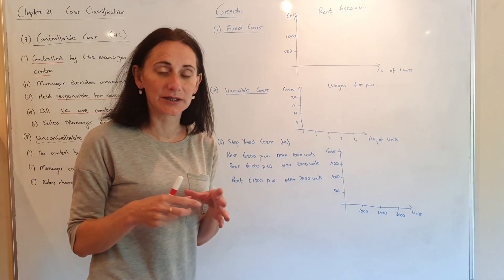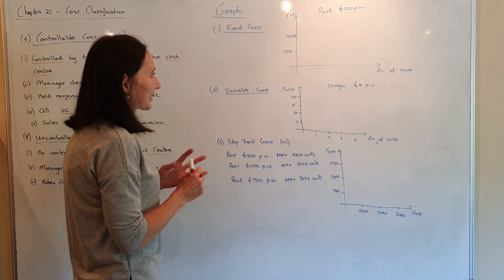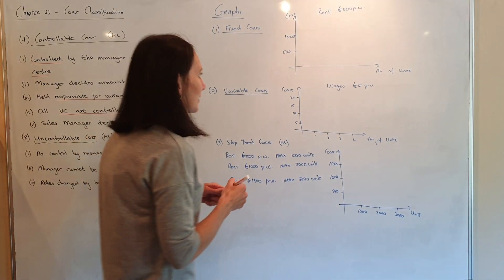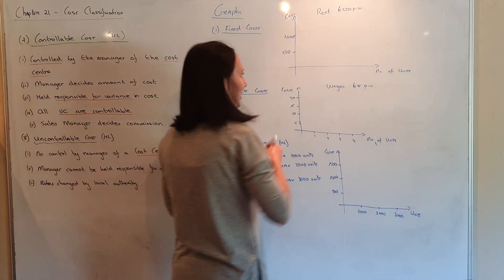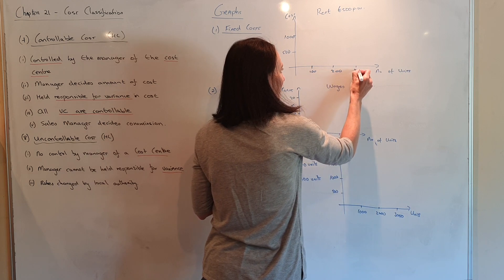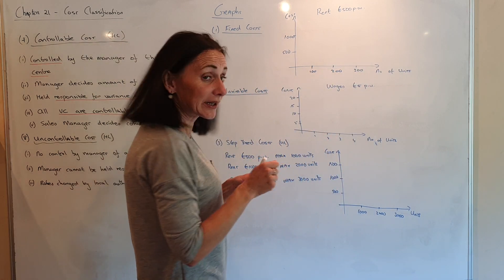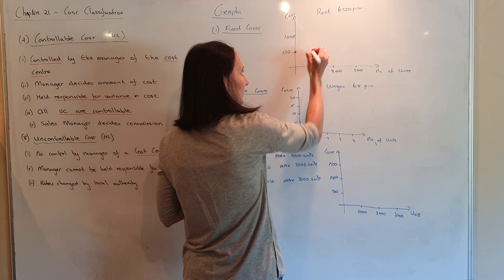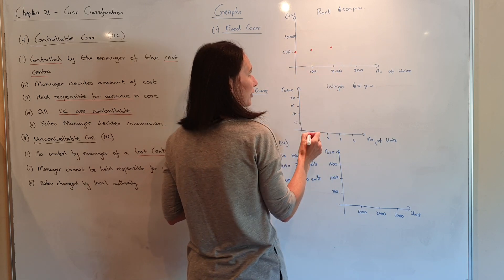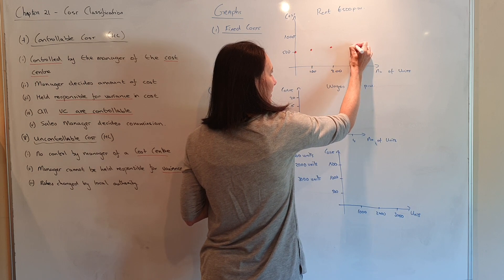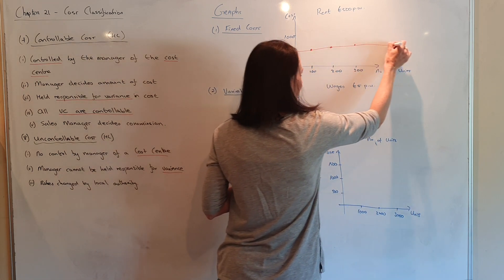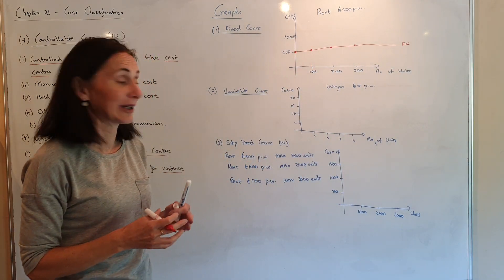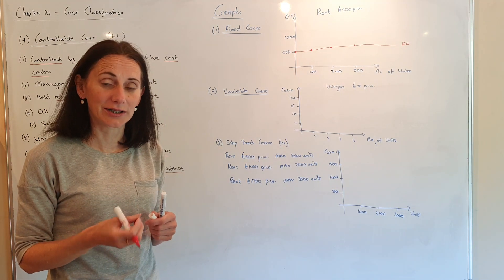Some of these costs can be shown on a graph. Let's look at fixed costs first — we're going to use rent because rent is a fixed cost at €500 per week. If I put in units — 100, 200, 300 — the rent is always €500. If I don't make anything, I still have to pay the rent. At 100 units, rent is €500; at 200, it's €500; at 300, it's still €500. So the rent goes straight across — it doesn't change with the number of units. A fixed cost is the same regardless of the number of units.